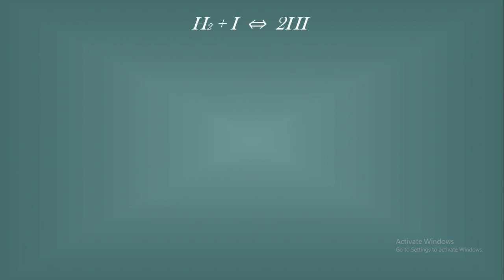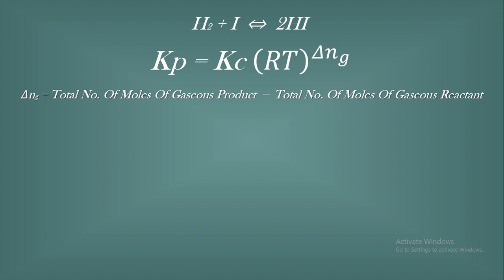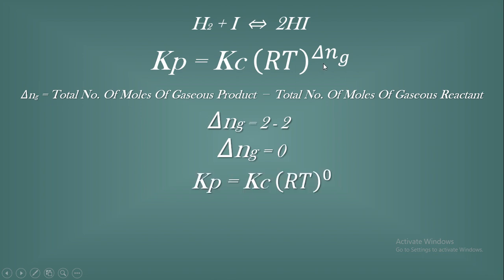For the first equation H₂ + I₂ ⇌ 2HI, the moles on both sides are equal, so we expect Kp = Kc. To prove this: ΔnG = moles in product minus moles in reactant = 2 − (1+1) = 2 − 2 = 0. Substituting into Kp = Kc × (RT)^ΔnG gives Kp = Kc × (RT)^0 = Kc × 1 = Kc. So Kp equals Kc is proven.